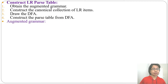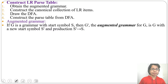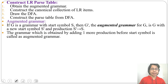What is augmented grammar? If you add an extra production before the first production, that is augmented grammar. For example, suppose a grammar is G — G' will be the augmented grammar. You add a production S' → S, where S is the start symbol. In simple terms, if you add one more production before the start symbol, that is an augmented grammar.